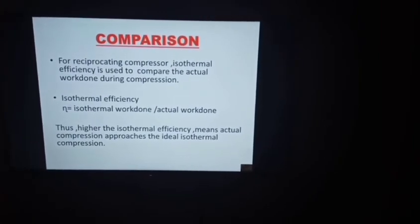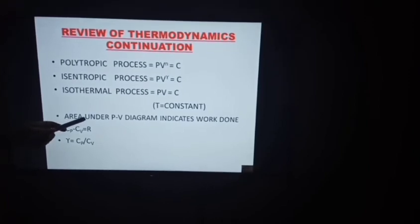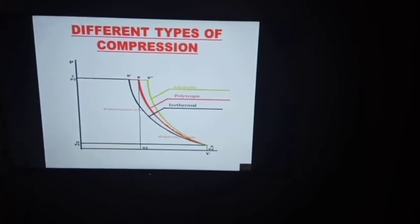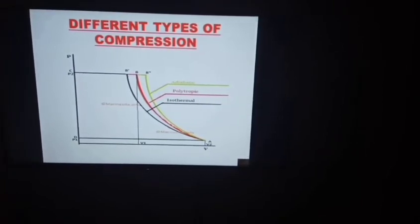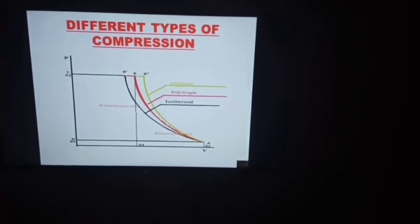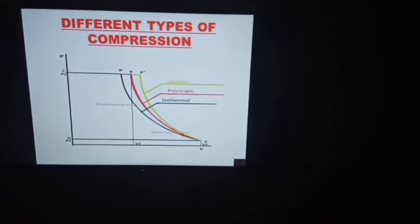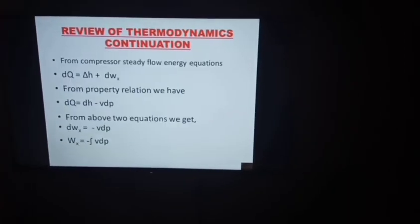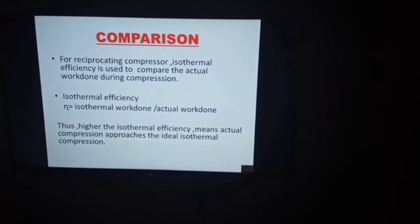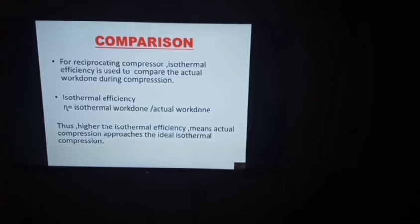We can make a comparison from the PV diagram, since the area under the PV diagram represents work done. From the diagram, isothermal compression requires minimum work because its area is the smallest compared to polytropic and adiabatic. For adiabatic compression, maximum work is required, and polytropic work lies between these two. Therefore, for reciprocating compressors, isothermal work is used as the standard of comparison for actual work done during compression.